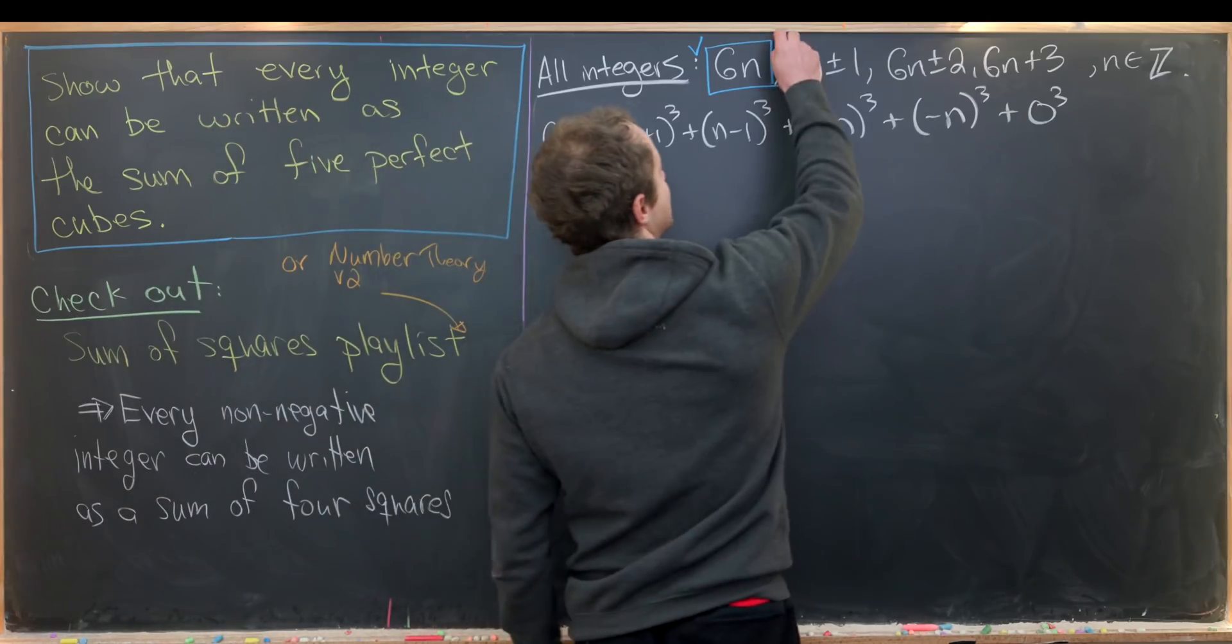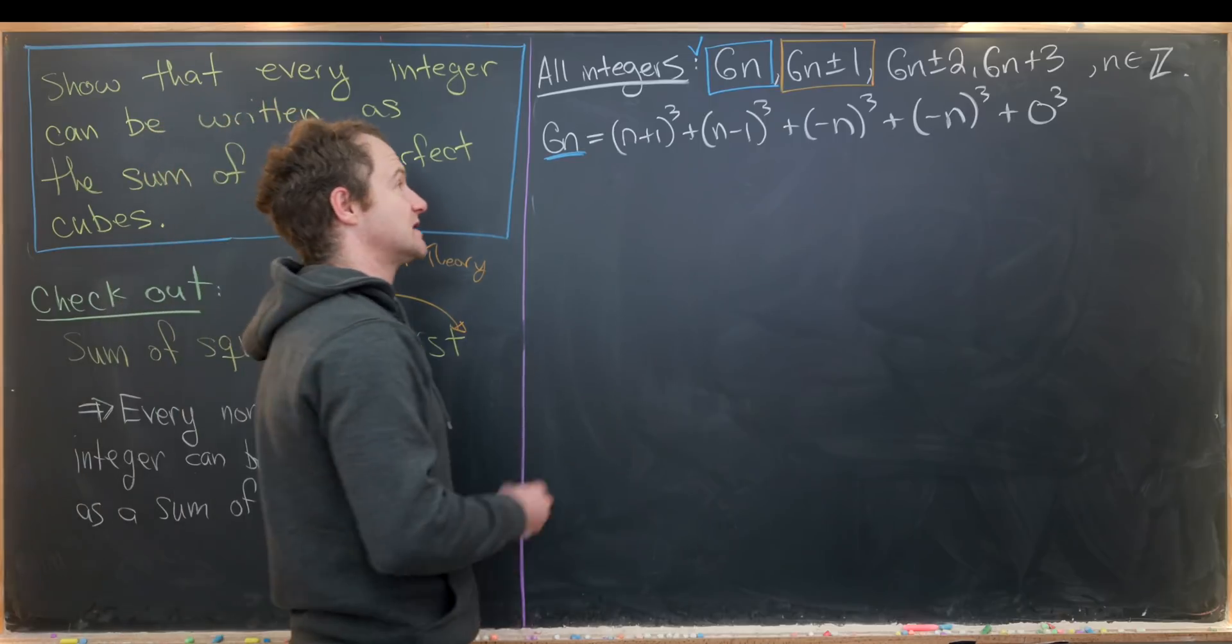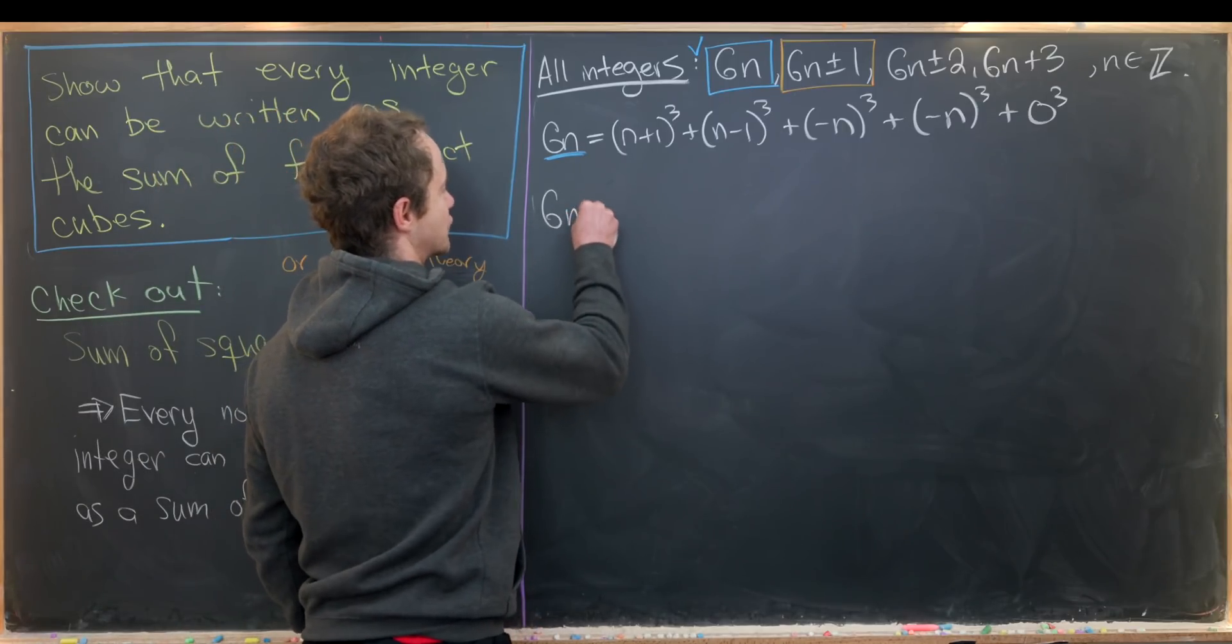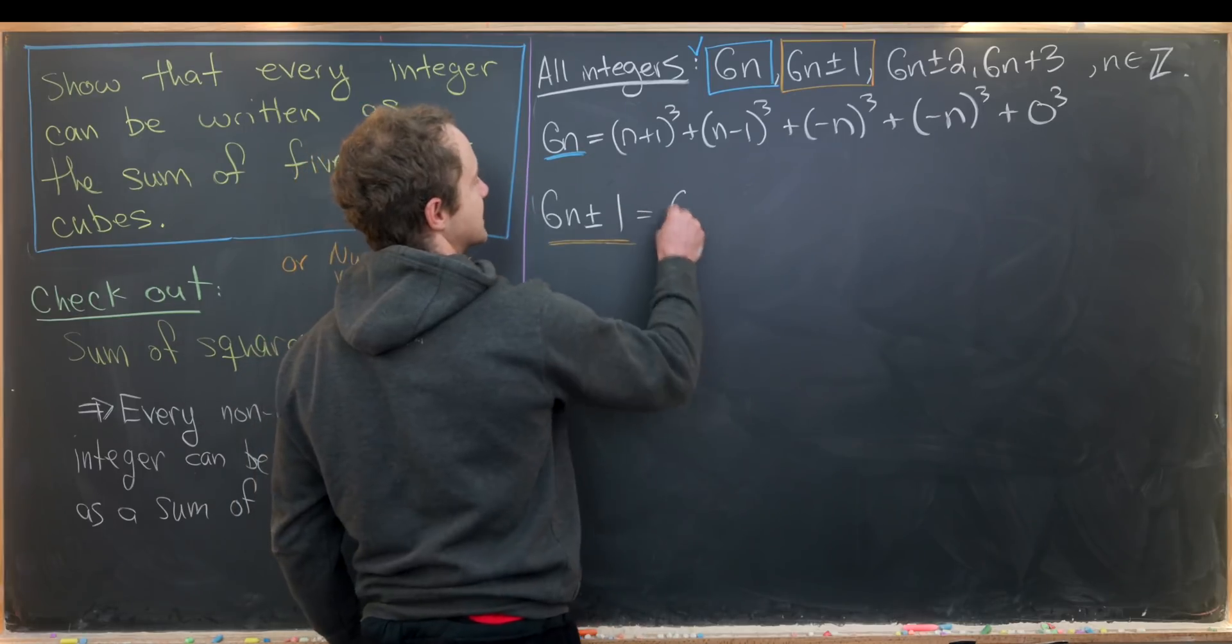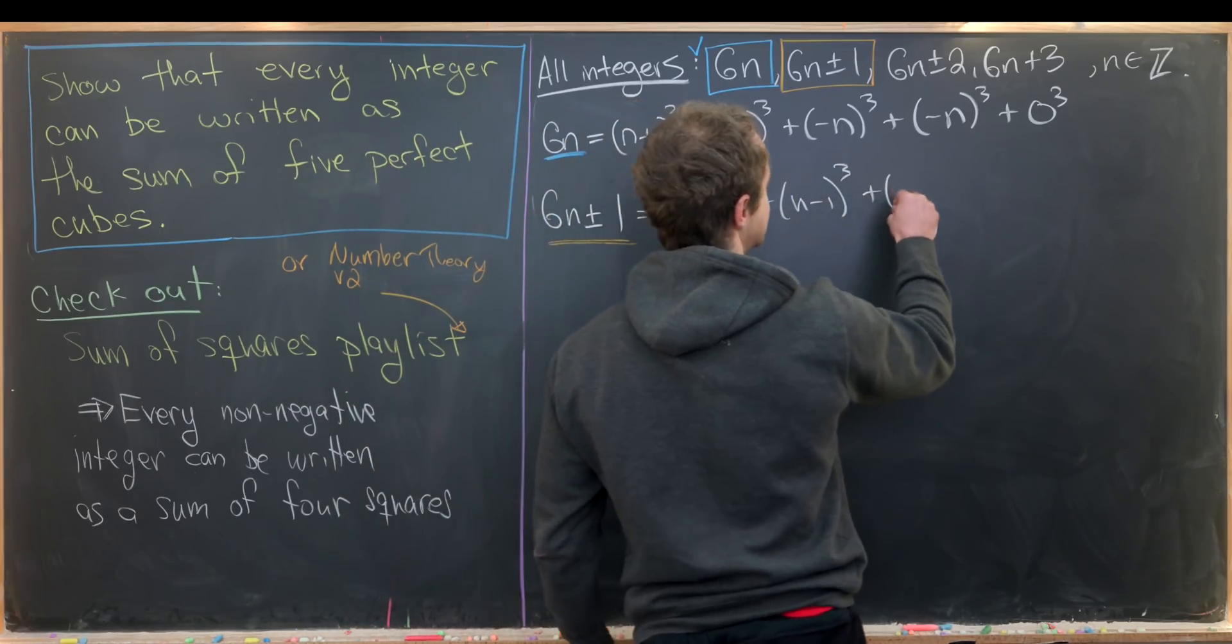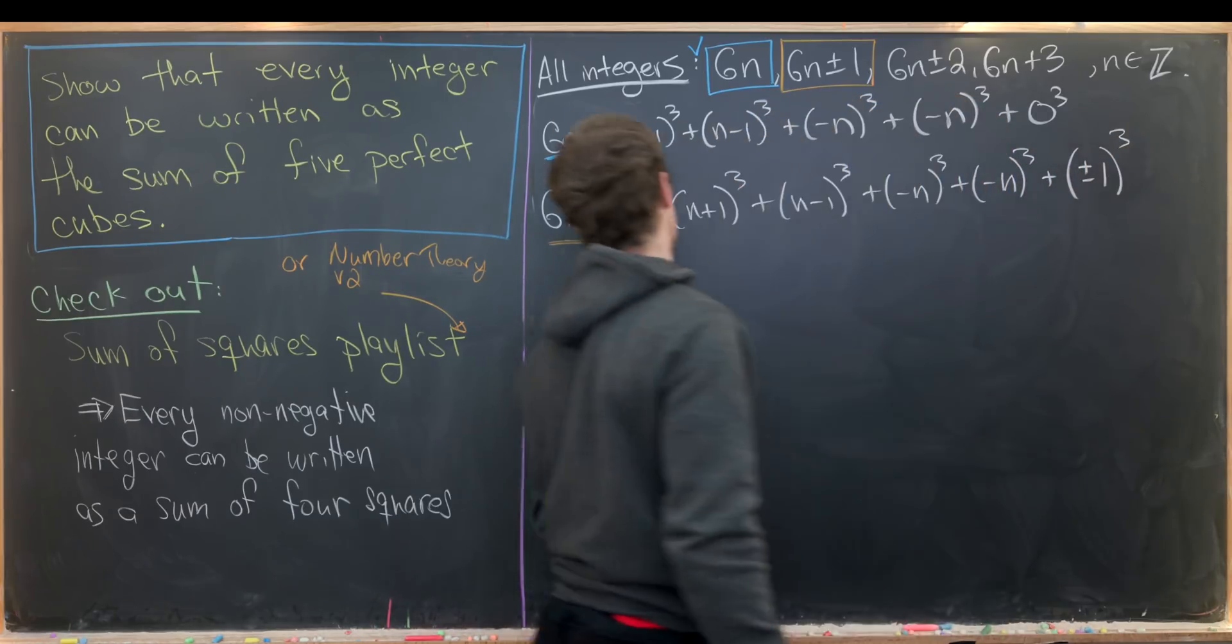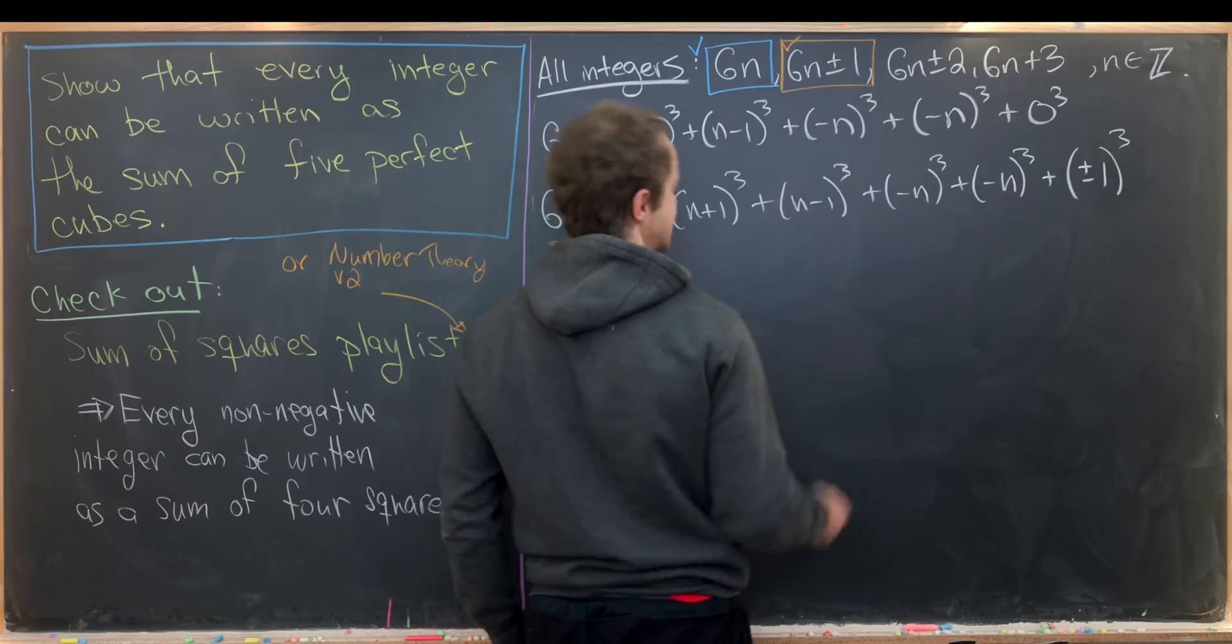Let's start with this first case which is maybe the next easiest case, 6n±1, because that's not too tricky given the fact that 1 is already a cube. So we can essentially just write that down. I'll take 6n±1 and do those two cases at once. This will be (n+1)³ + (n-1)³ + (-n)³ + (-n)³ + (±1)³, depending on if we have a plus minus here. So that means we're good in this case as well.